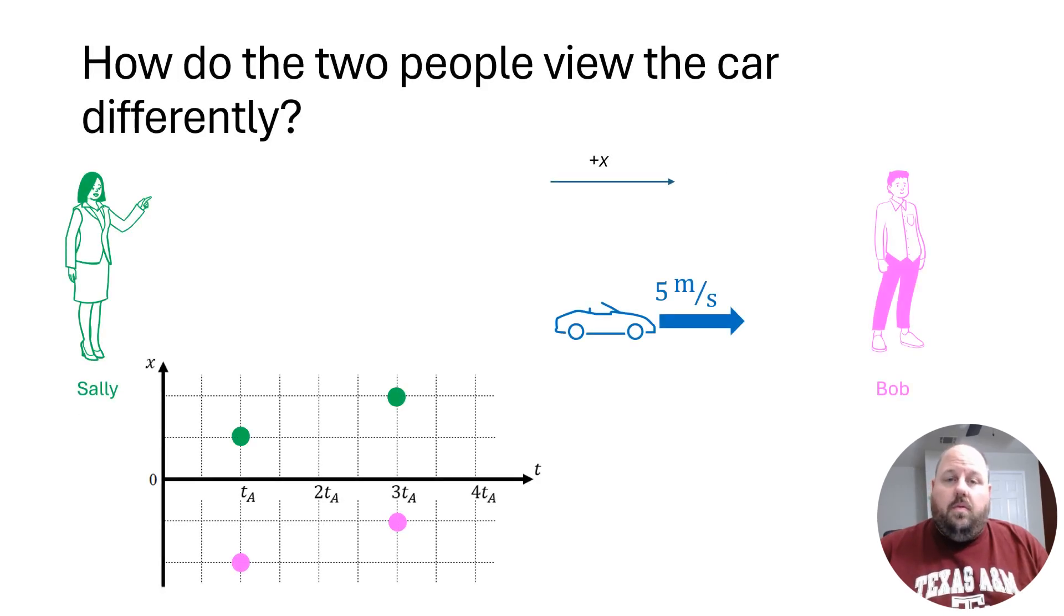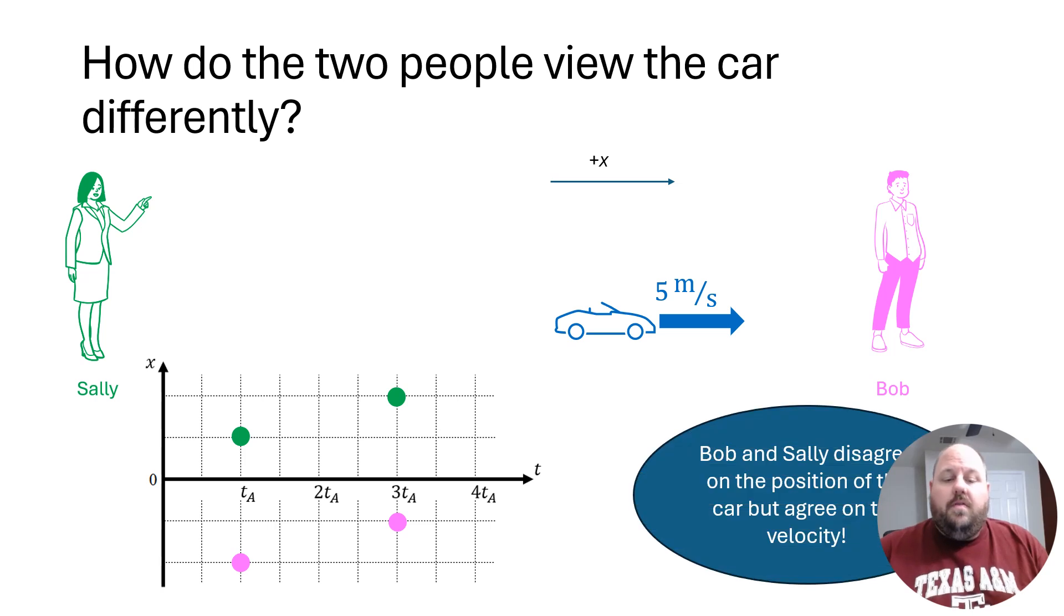And so in the case of our people viewing this car, both Sally and Bob agree on the velocity of the car, but they disagree on the position of the car.